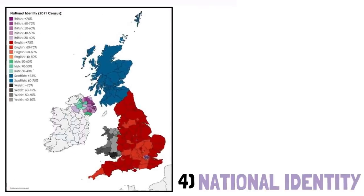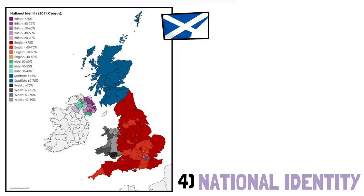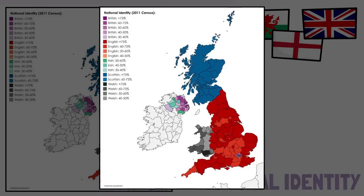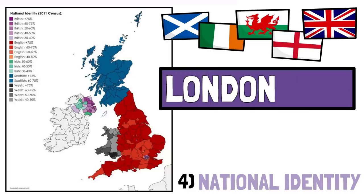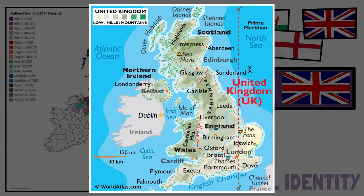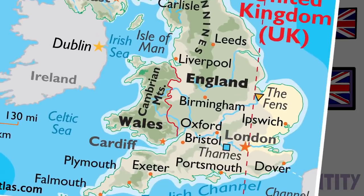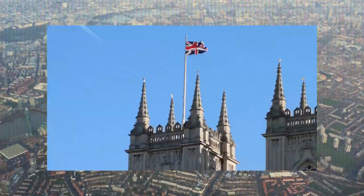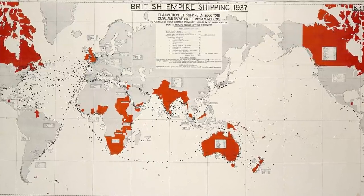This next map is fascinating — it shows which national identity people in the UK most identify with, based on the 2011 census, with five options: Scottish, Irish, Welsh, English, or British. Most people in Scotland consider themselves Scottish first; the same is true, though slightly less so, in Wales. England strongly identifies as English, but London mostly considers itself British rather than English — perhaps reflecting its status as capital of the whole UK, its international character, and the many people who moved there from across the world and former British Empire territories.